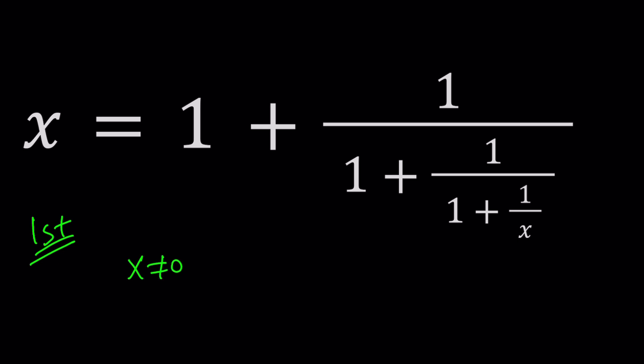What about negative 1? x can't be negative 1 either. Why? Because if x is negative 1, this becomes negative 1 and you get a 0. So you don't want x to be negative 1 either. How about negative 2 or negative 1 half? I think it was negative 1 half.